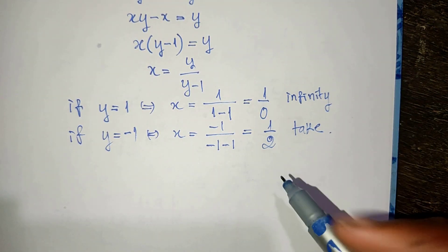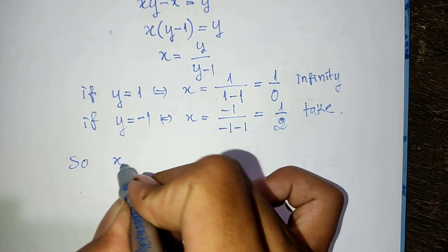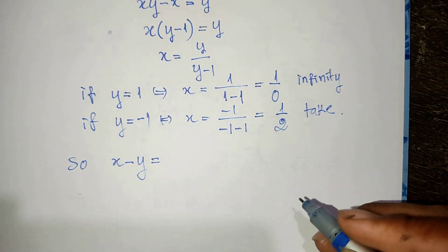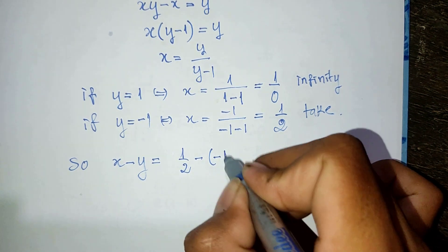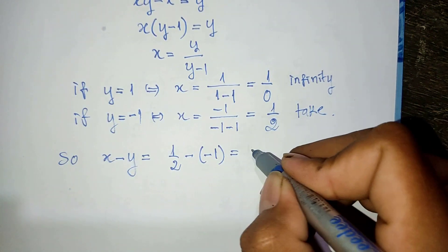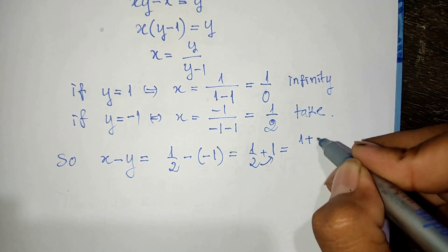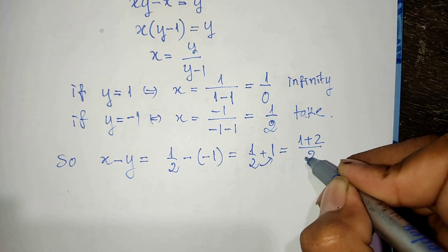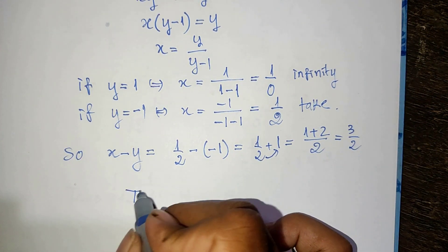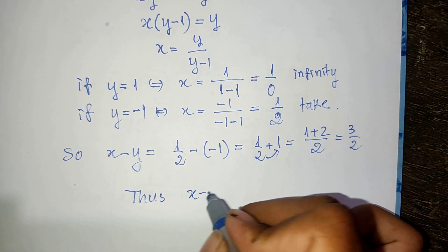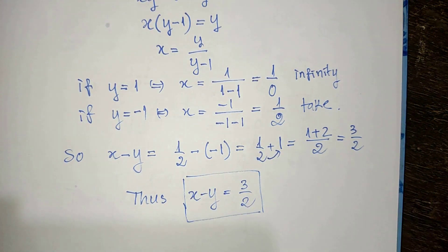Now we have the values of h and y: h equals one divided by two, and y equals minus one. So h minus y equals one divided by two minus (minus one), which gives one divided by two plus one, equal to one plus two divided by two, equal to three divided by two. So the value of the expression h minus y equals three over two is our solution.